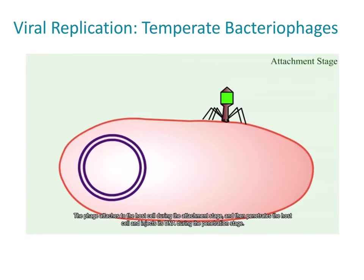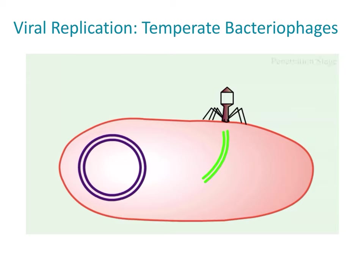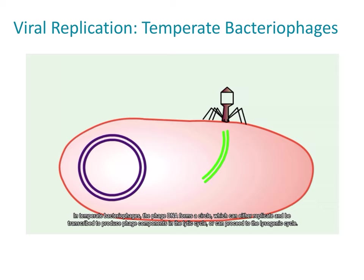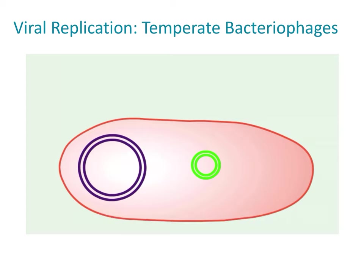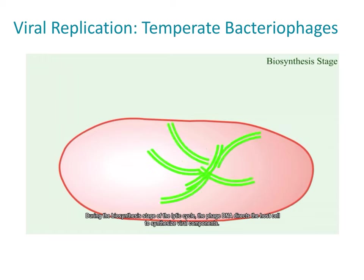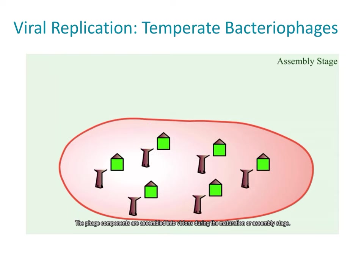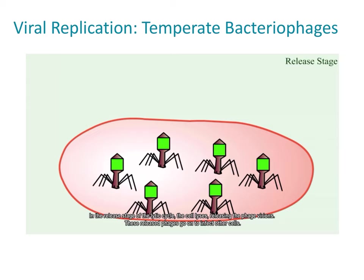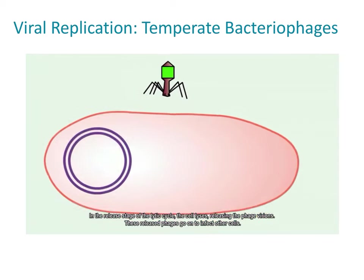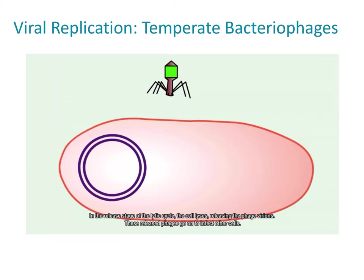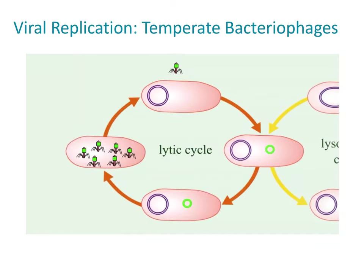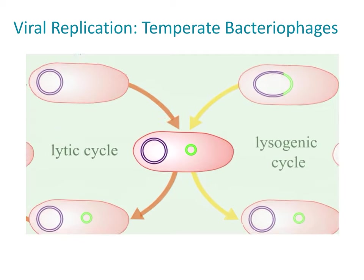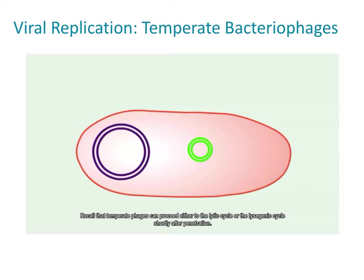The video clip shows the lytic cycle: the phage attaches to the host cell during the attachment stage, then penetrates and injects its DNA during penetration. The phage causes the host DNA to break into small pieces, then uses the host machinery to synthesize new copies of its DNA and produce viral proteins — this is the biosynthesis stage. Once biosynthesis is complete, phage components are assembled into virions during maturation. In the release stage, the cell lyses, releasing the phage virions to infect other cells.